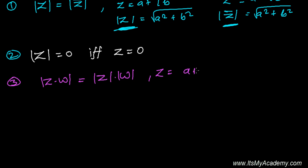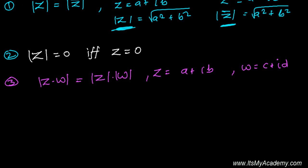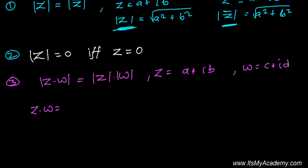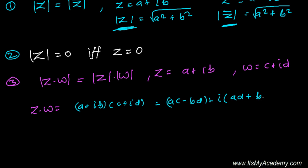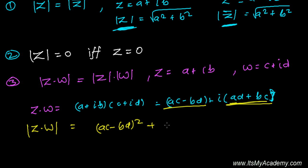Let's say Z is A plus iB and W is C plus iD. First I'll find Z times W by multiplying A plus iB with C plus iD. That gives us AC minus BD plus i times (AD plus BC). Now I'm going to find the absolute value of this product, which is the square root of (AC minus BD) squared plus (AD plus BC) squared.